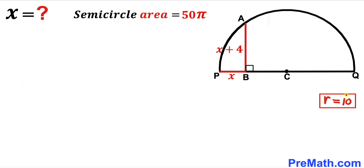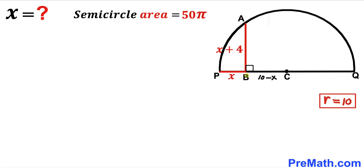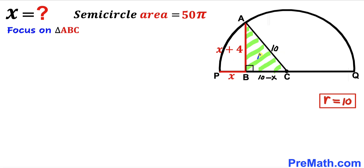Since radius r equals 10, radius PC is 10 units. We know segment PB is x, so the remaining segment BC is 10 minus x. In the next step, I connect center C with point A, giving us right triangle ABC. Since AC is the radius of the semicircle, AC equals 10.